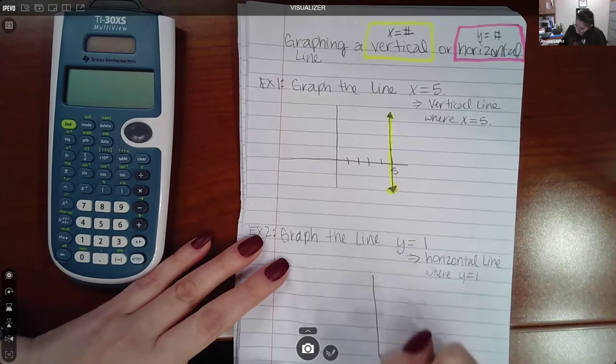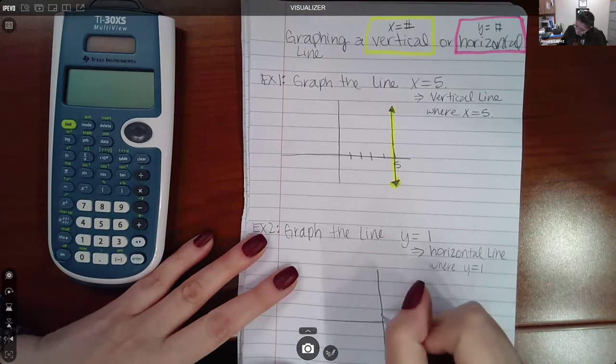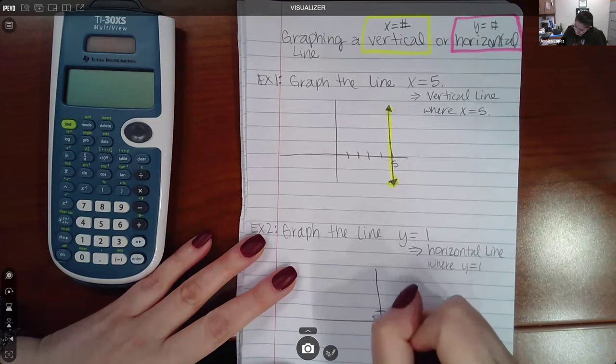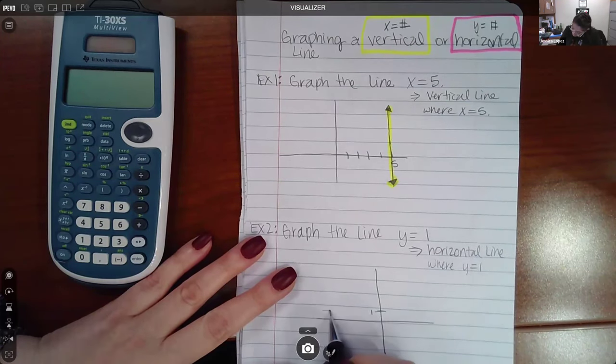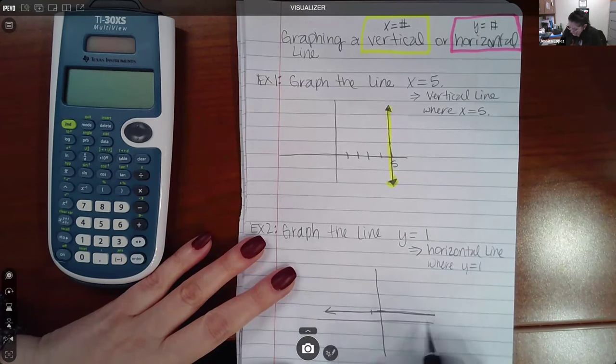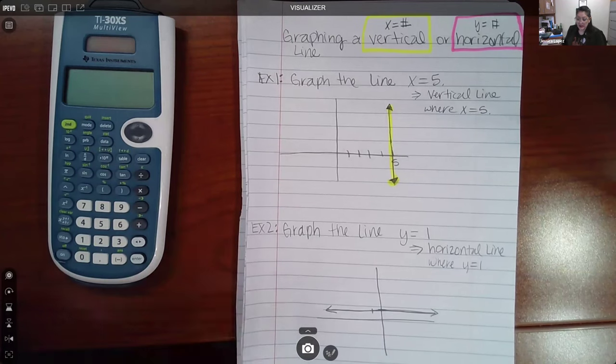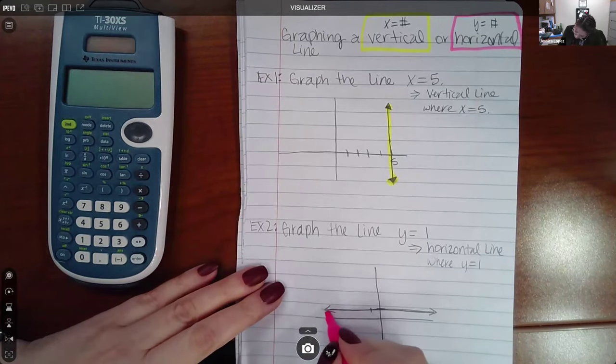So then again, if I draw my coordinate system here, here's the Y value 1, and I'm going to have a horizontal line. I apologize if that's not straight. But you're going to have a horizontal line at that Y value of 1.